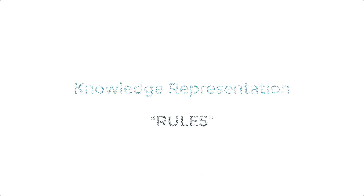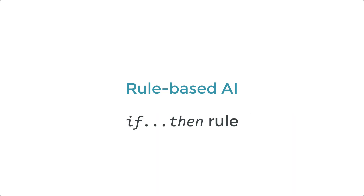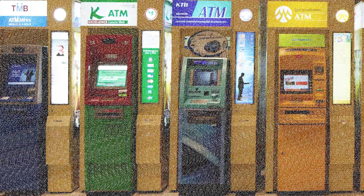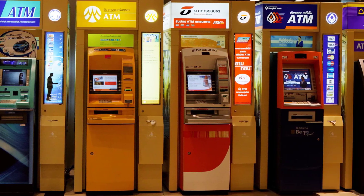Rule-based systems represent knowledge in terms of a set of rules that mimic the reasoning of a human expert. Rules connect symbols in a relationship similar to an if-then statement. One popular form of symbolic AI is expert systems, the simplest form of artificial intelligence. An oversimplified example of a rule-based expert system is the automated teller machine, or ATM.